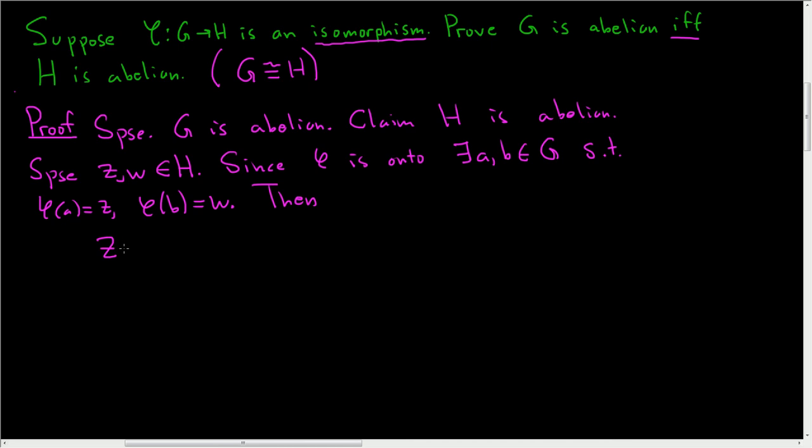let's look at Z times W. Well that's phi of A times phi of B, and phi is a group homomorphism so this is equal to phi of A times B. And G is abelian and A and B are actually in G so we can write this as phi of BA. So this is a key step in the proof. This is because G is abelian.